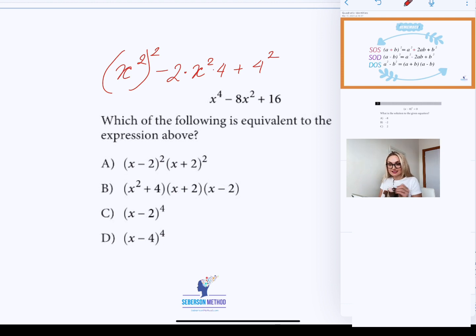As you can see, I did not change anything. The only thing that I changed was I rewrote x to the fourth as x squared squared, and I rewrote the middle term. Instead of negative 8x squared, I broke it down into 2ab, negative 2ab.